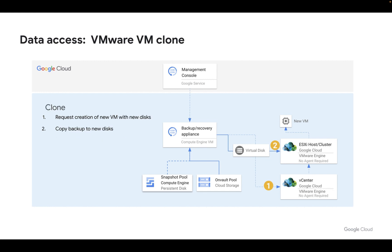In addition to mount, we can also do a clone. Where a mount creates a virtual copy and can be accessed very fast, a clone will copy the blocks of the backup directly into the data store of the ESXi host and then start the new VM. A clone generates a completely independent VM and is very similar to what you would consider a traditional restore.